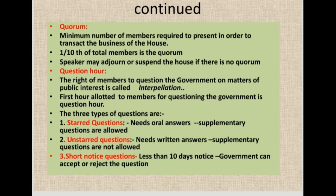Questions are of three categories: starred questions, unstarred questions, and short notice questions. Starred questions are those to which a member wishes to have an oral answer — the government must reply orally. Such questions are indicated by an asterisk mark, considered very important. When such questions are asked and replies are given, members who asked them can even pose supplementary questions and get further replies from the ministers.